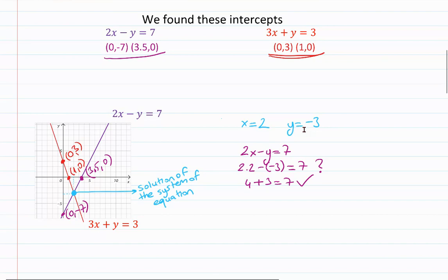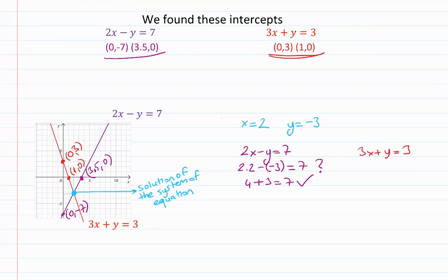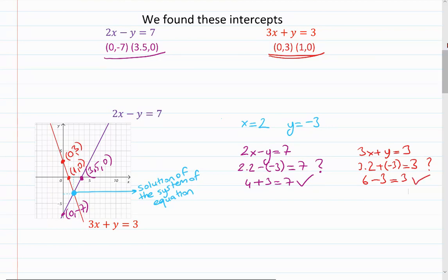For the red equation 3x plus y equals 3, putting x equals 2 and y equals negative 3: 3 times 2 plus negative 3 is 6 minus 3 equals 3. It's satisfied.